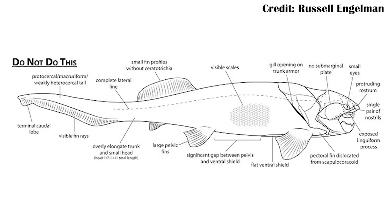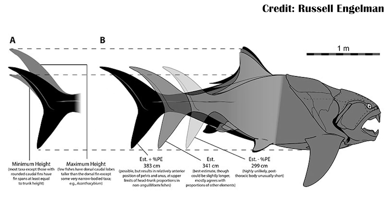This research extends beyond just Dunkleosteus — you can apply it to basically all of the arthrodires, with these different parts of how you should reconstruct them all existing simultaneously. There's a figure you can pause on. We can say with pretty good confidence that Dunkleosteus was mostly between 3 to 4 meters. Maybe a few on the super upper end could get a little bit above 4 meters, but that's pretty unlikely.